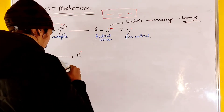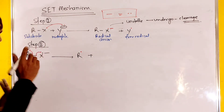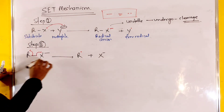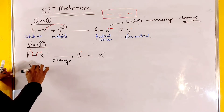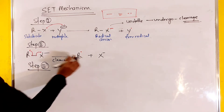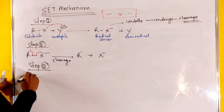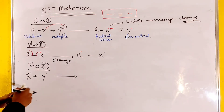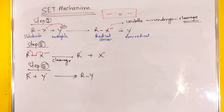At the same time, this is the cleavage step — the third step. The third step is the attack: R free radical plus Y free radical gives the R-Y compound, meaning the nucleophilic substitution reaction product is formed.